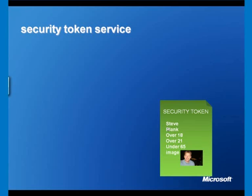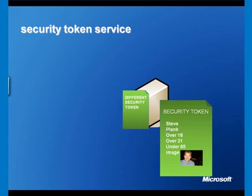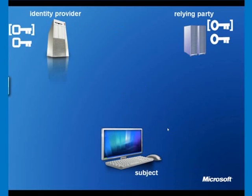We get a security token from a security token service. What is a security token service? It's a service which issues security tokens. We need to give it something in order to get a security token — possibly a different security token, a username and password, a biometric signature, or a certificate. I want to look now at how we can use a security token service to issue tokens to a subject and give them to a relying party. To do that, I'm going to use the whiteboard.